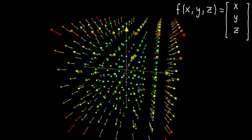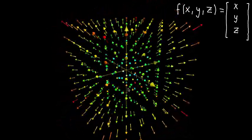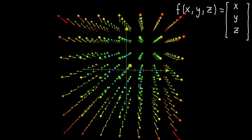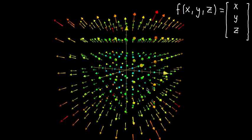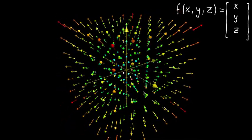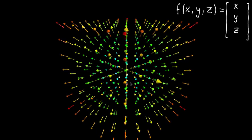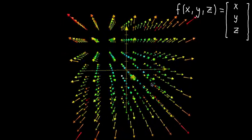And all of these are pointing directly away from the origin. And this is one of those vector fields that is actually pretty, a good one to have a strong intuition of. Because it comes up now and then, thinking about what the identity function looks like as a vector field itself. In the next video, I'll talk through another example that's a little bit more complicated than this.